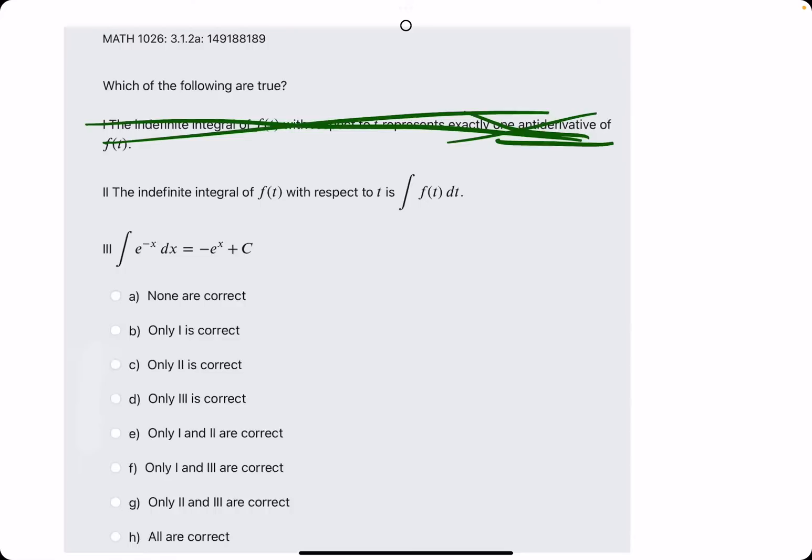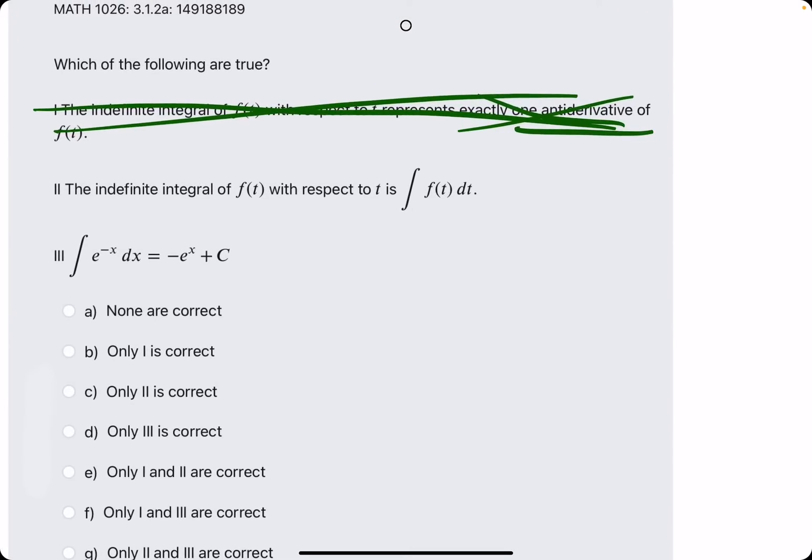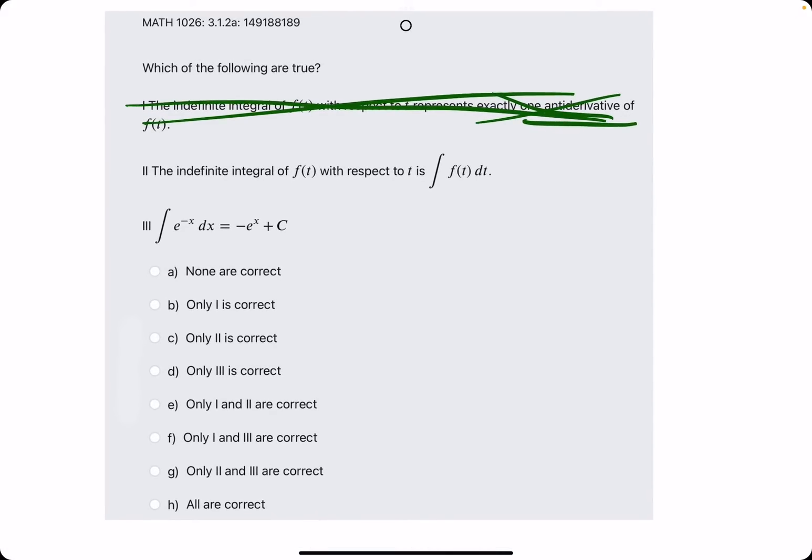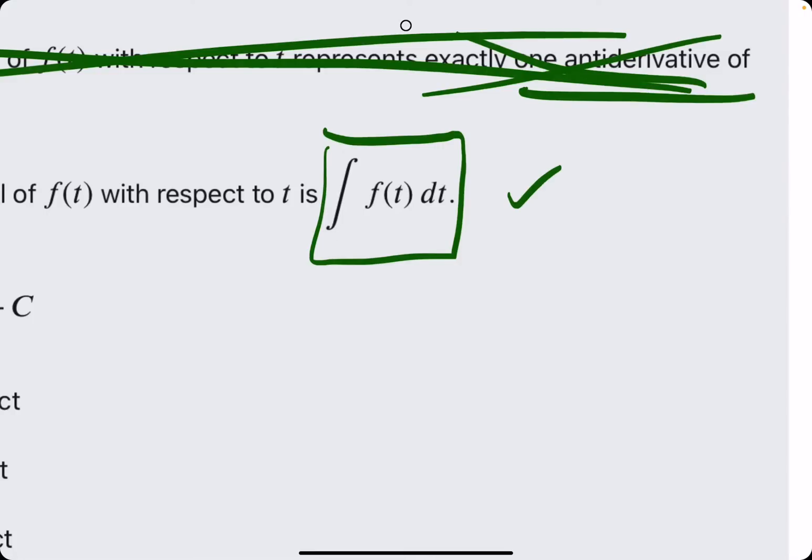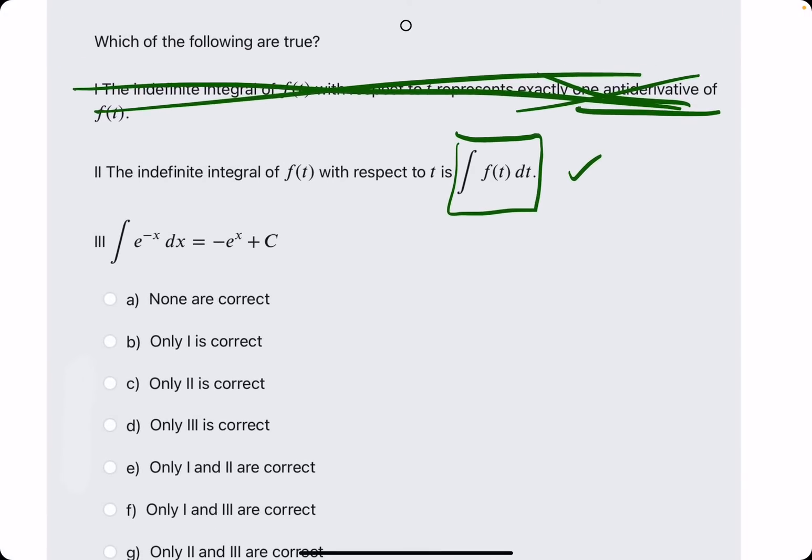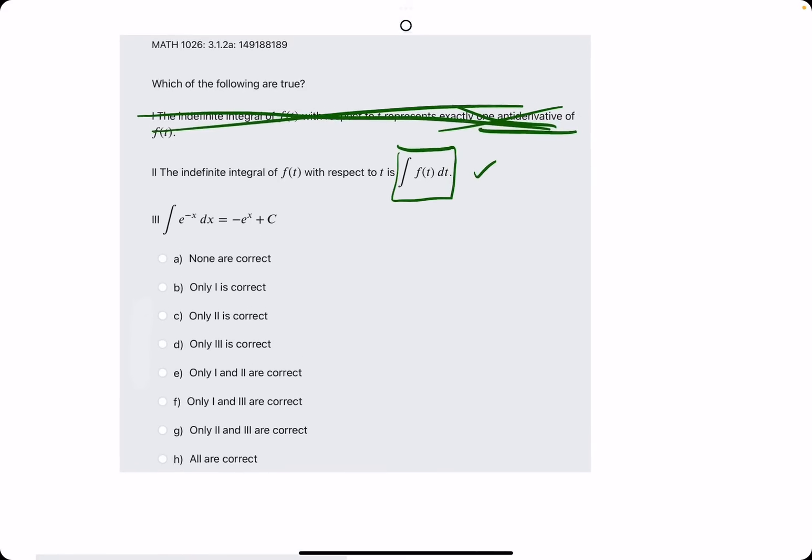Number two. The indefinite integral of f with respect to t is f(t), or the integral of f(t) dt. Yeah, I mean, I'd say that's true. That's kind of just the notation for the indefinite integral. Again, there are no boundaries listed here, a and b. And it just has lowercase f(t) dt on the inside. So, we need the integral sign. We need the f(t). We need the dt. And with all of those together, that is the indefinite integral.